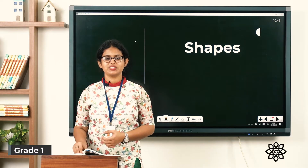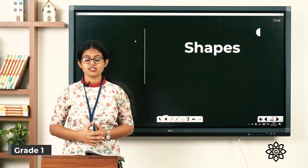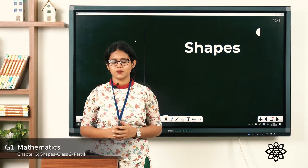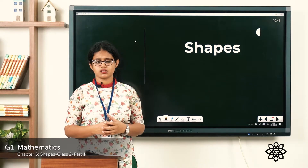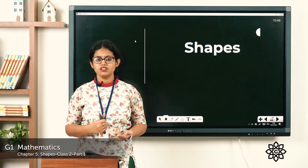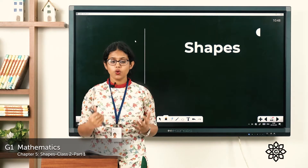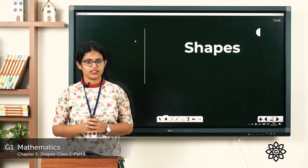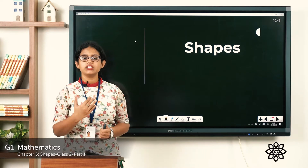A very good morning to all. Today we are going to start with another topic in Math that is about 3D shapes. In the last class, what did we learn? We learned about 2D shapes — square, rectangle, triangle, circle, and oval. I asked you to go around your house and look for different shapes. I hope you have done that. So now let's move on to the next topic, which is about 3D shapes.